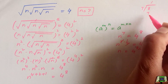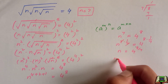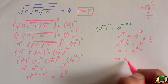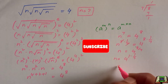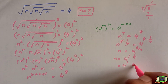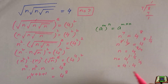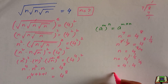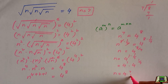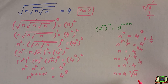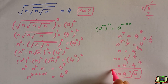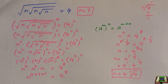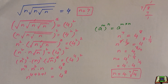Now, 8 over 7: 7 goes into 8 one time with a remainder of 1, so we can write it as 4 raised to the power 1 plus 1 over 7. This equals 4 raised to the power 1 times 4 raised to the power 1 over 7, which means n equals 4 times the 7th root of 4. This is the final and required answer. I hope you find this solution useful — if so, please thumbs up and share it with your friends.